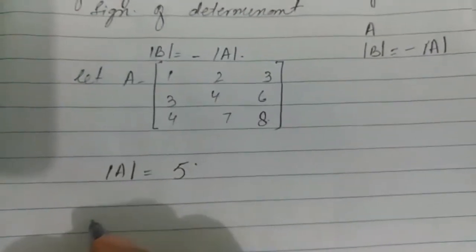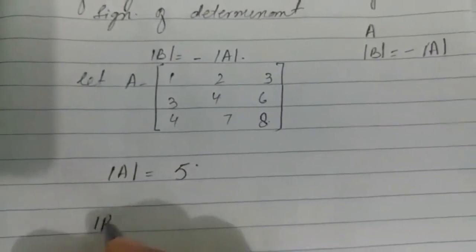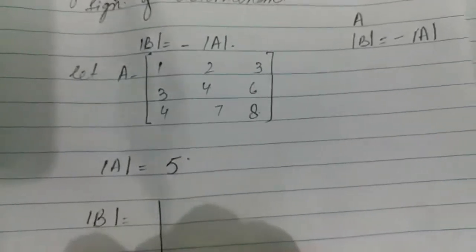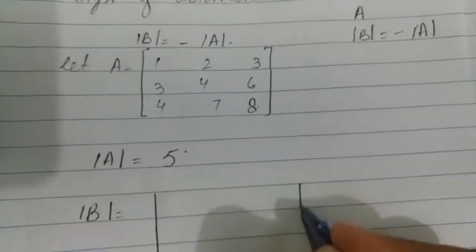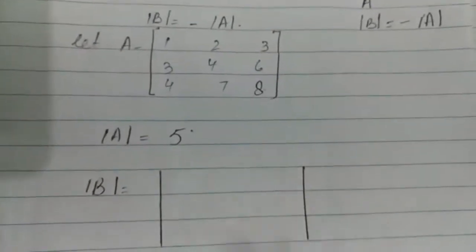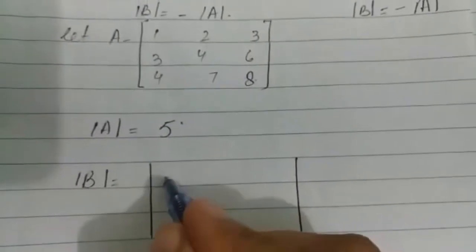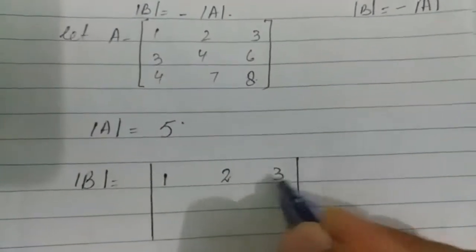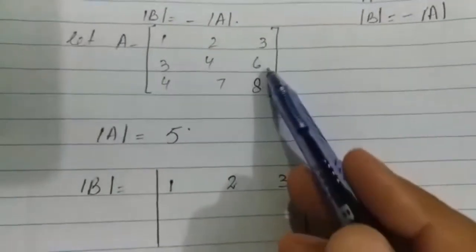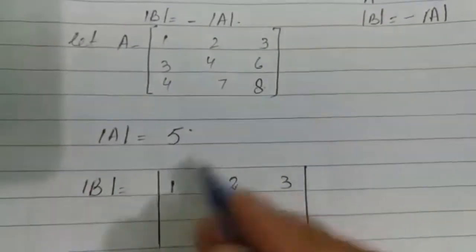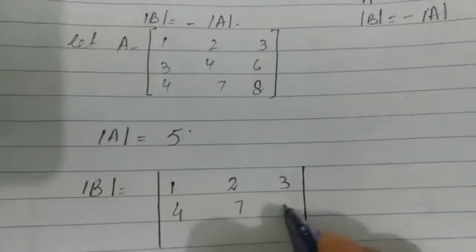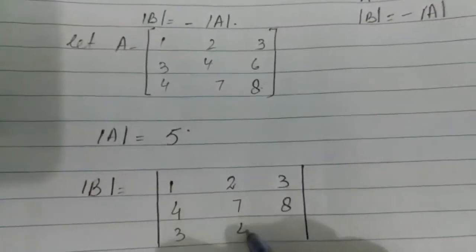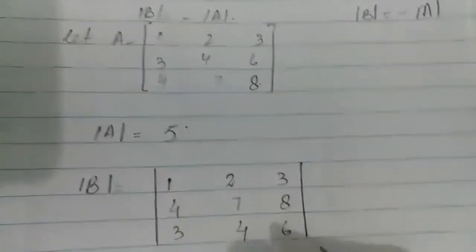Now we have to find the determinant of B. To get matrix B, we interchange the second and third rows. So the first row [1, 2, 3] stays the same, and we swap to get [4, 7, 8] as the second row and [3, 4, 6] as the third row.